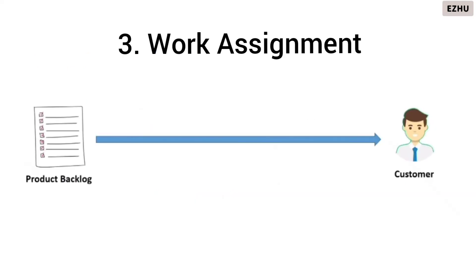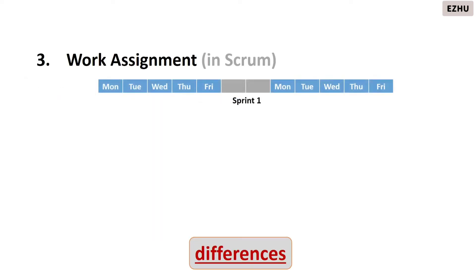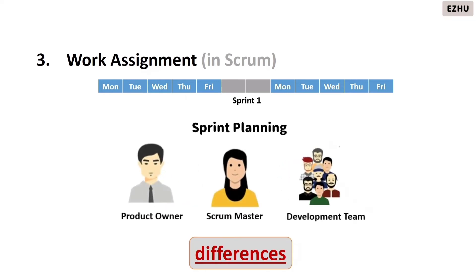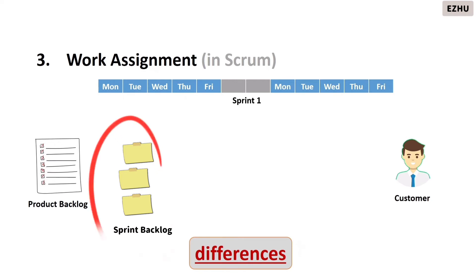Let us now see how work assignment is done. Both scrum and kanban use the pull technique but the implementations are completely different. Work is executed in scrum in the form of sprints — a two-week period by which an identified set of features will be incrementally developed and delivered. The scrum master runs a sprint planning meeting attended by the product owner and the development team. All user requirements, features, and user stories are captured in the product backlog. The product owner then prioritizes the list of items from the product backlog to be executed in the sprint, and only those prioritized items will be executed in that sprint.